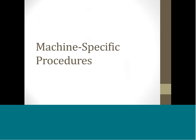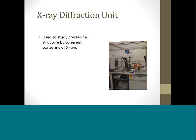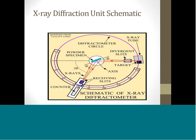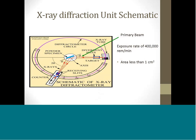Machine-specific procedures. An X-ray diffraction unit is used to study the structure of crystalline materials and is based on the scattering of X-rays from individual atoms. This slide illustrates schematically the geometric arrangement of the principal components of an X-ray diffraction instrument: the relative positions of the X-ray tube, primary beam slit or collimator, sample, diffracted beam slit, and detector. The primary beam of a diffraction unit is small in area, less than one centimeter squared, but very intense at 400,000 REM per minute. These machines present a unique radiation hazard — the primary X-ray beam is so intense that a few seconds exposure will cause serious injury to the skin.